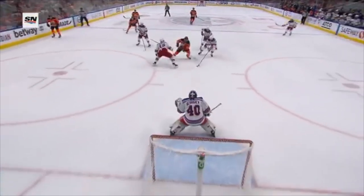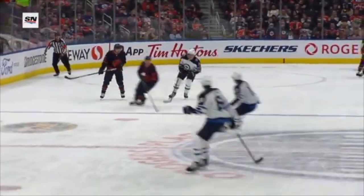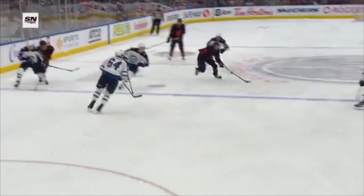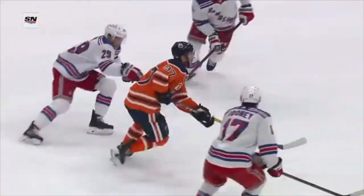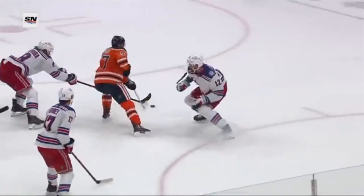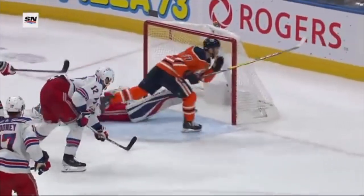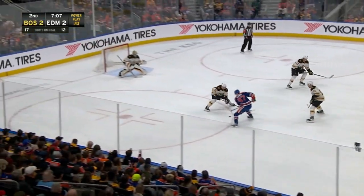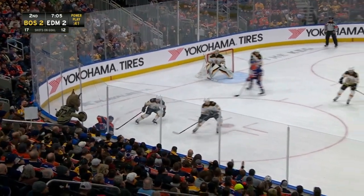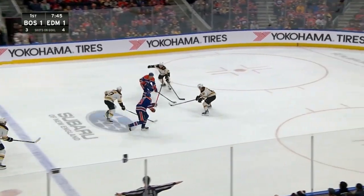Think of it this way: if you wanted to improve your five-hole scoring, you shouldn't shoot five-hole all the time. What if the goalie goes down early? Shooting at five-hole would be an obvious waste. If you want to improve your five-hole scoring, you should get good at reading the goalie, noticing their stance, movement patterns, and position. Influencing the goalie and making optimal decisions is the real goal.